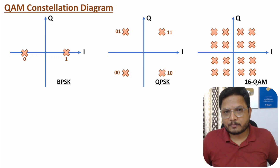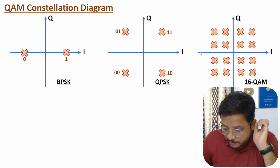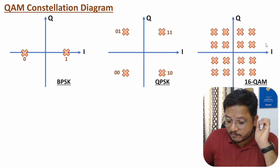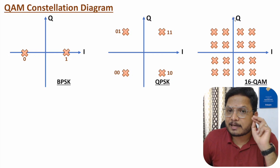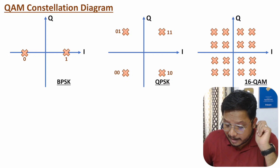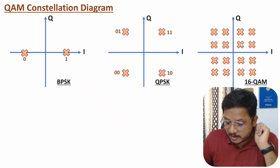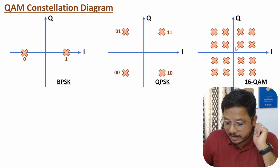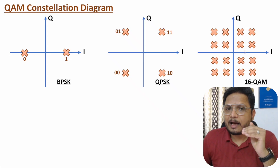Now consider 16-QAM, which has 16 symbols in total. The in-phase axis represents cos(ωc·t) and the quadrature phase axis represents sin(ωc·t). Distance with respect to the center represents amplitude, and angle with respect to the I-axis represents phase. You can observe that some groups of four symbols have equal distance from the center but different phases.